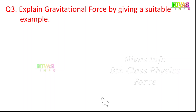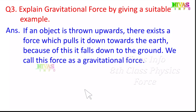Question number 3: Explain gravitational force by giving a suitable example. If an object is thrown upwards, there exists a force which pulls it down towards the earth. Because of this, it falls down to the ground. We call this force gravitational force. If an object is thrown upward into the sky, after some height it will come back down.